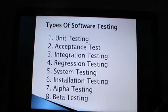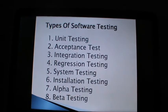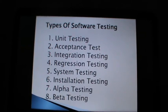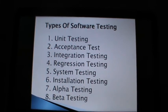There are different types of software testing: first, unit testing; second, acceptance testing; third, integration testing; fourth, regression testing; fifth, system testing; sixth, installation testing; seventh, alpha testing; and eighth, beta testing.